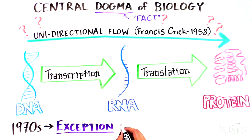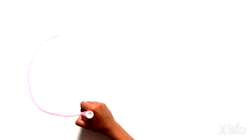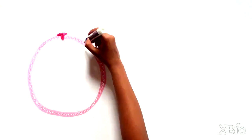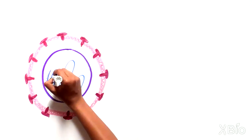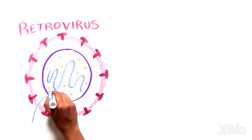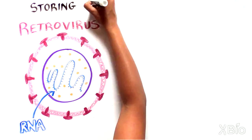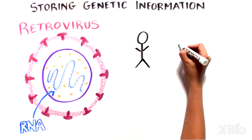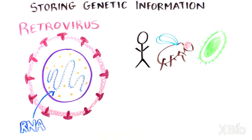In the 1970s scientists found an exception to the central dogma. These scientists were studying viruses and they realized that some viruses called retroviruses use RNA and not DNA to store their genetic information. This is different from most other organisms.